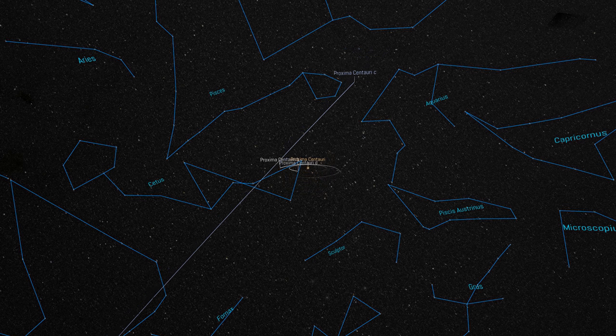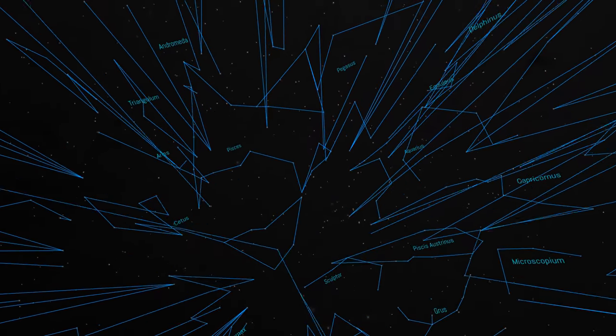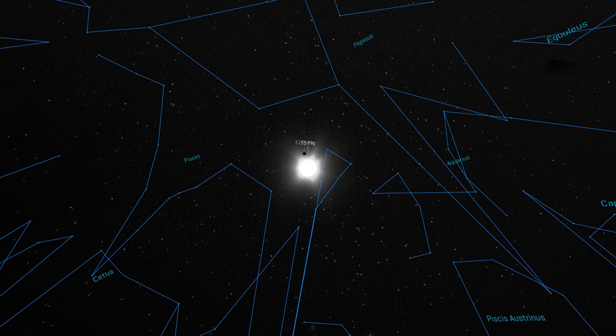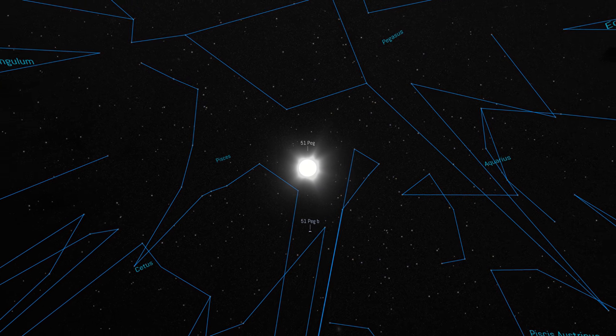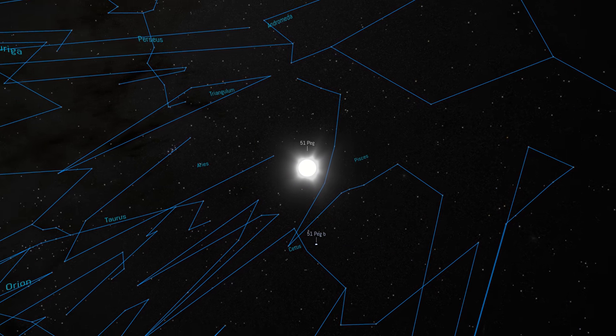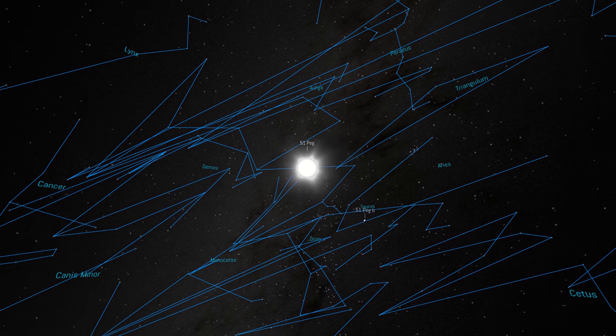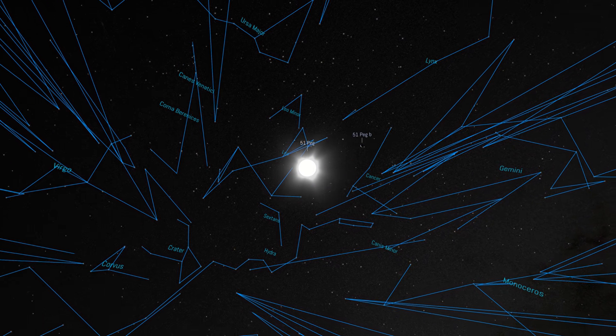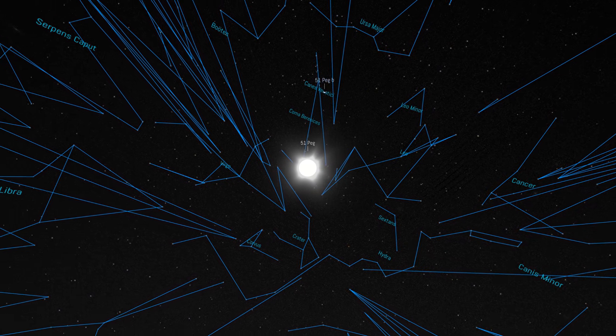The patterns of the constellations continue to change shape as we move even further out to a distance of 50 light years. We now reach the star called 51 Pegasi, or 51 Peg, which is host to a planet called 51 Peg B. Planet 51 Peg B is called an exoplanet since it's located outside of our own solar system. Discovered in 1995 is the very first exoplanet ever discovered, opening up an entirely new field of research in astronomy.